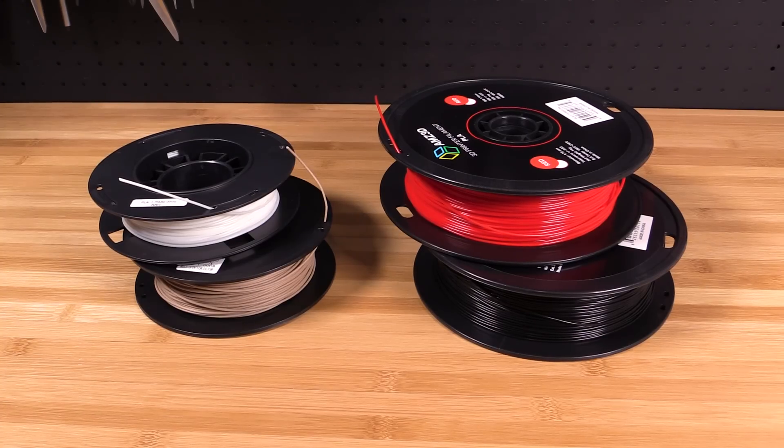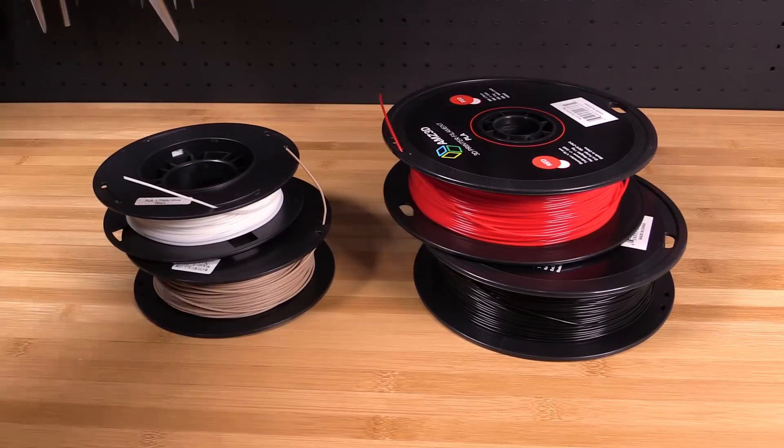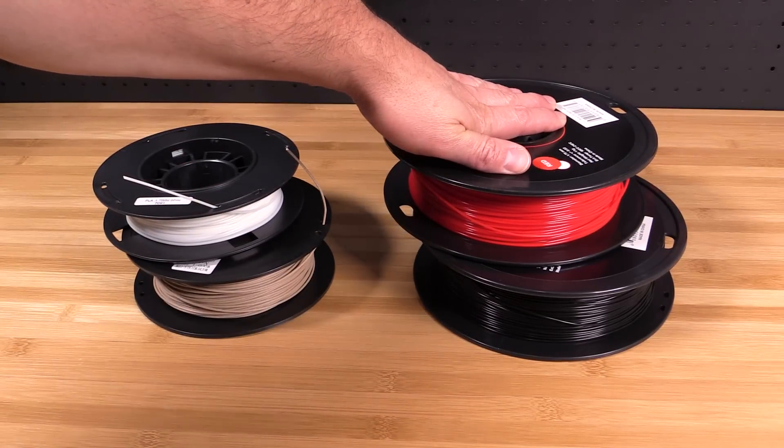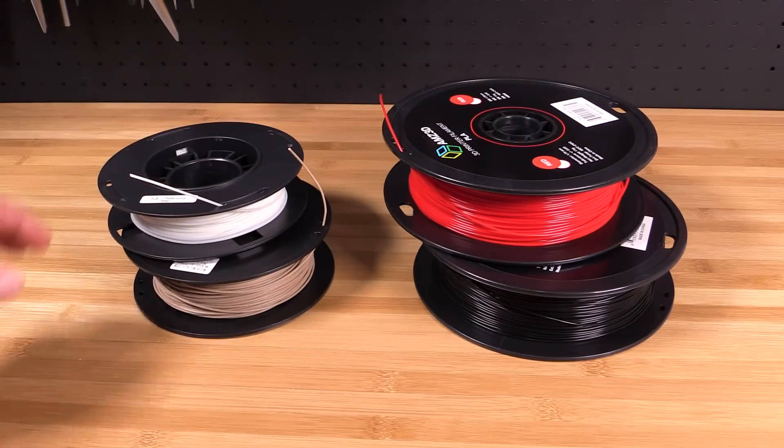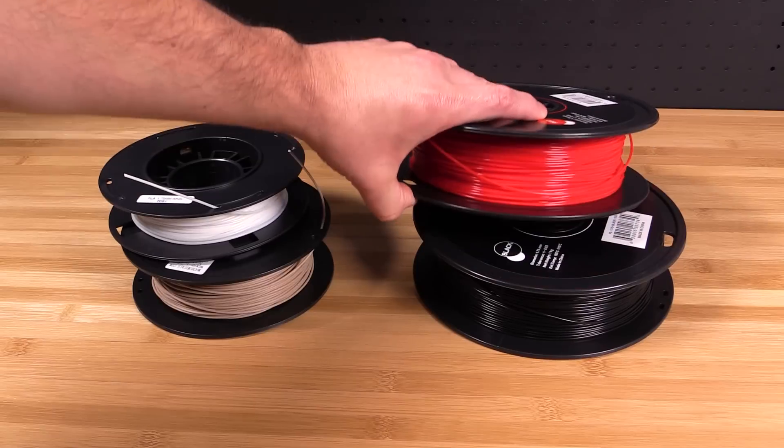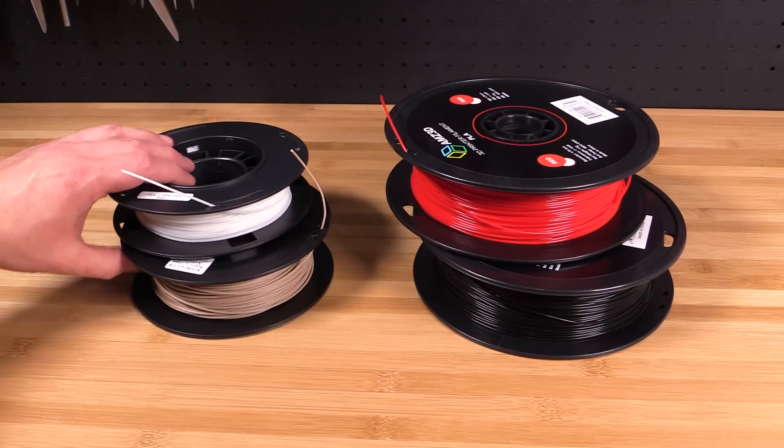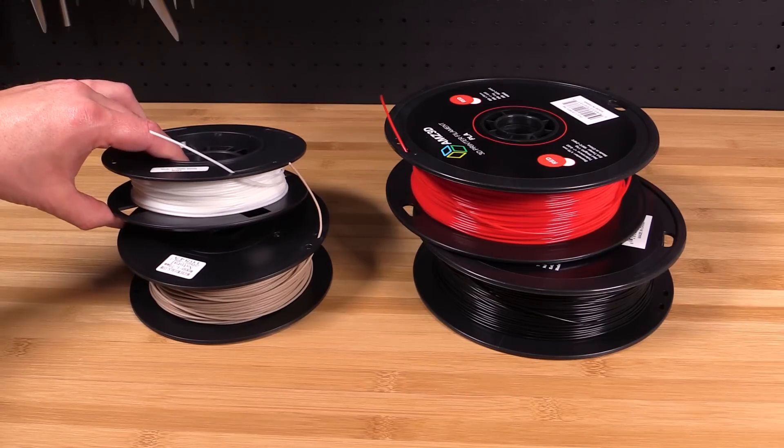So the next thing I want to talk to you about is filament. Filament is the plastic that basically feeds into your 3D printer that it prints with. Think of it kind of like glue gun stick for a glue gun. It comes in tons of different colors. Here we got red and black and white that actually came with it and we have that wood tone here that Colin was talking about.